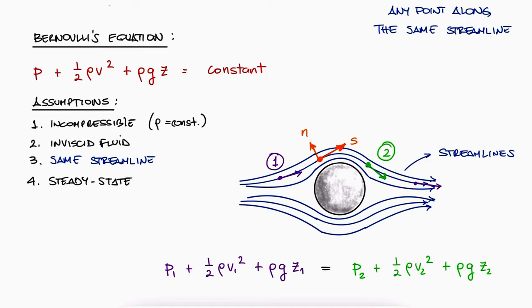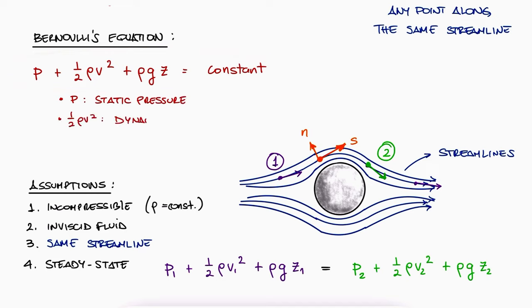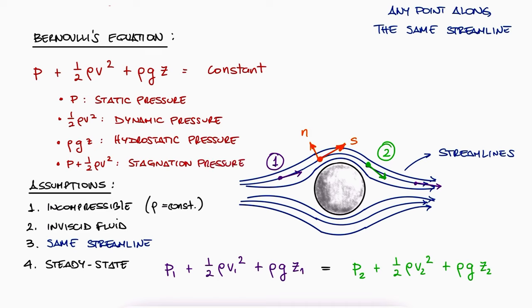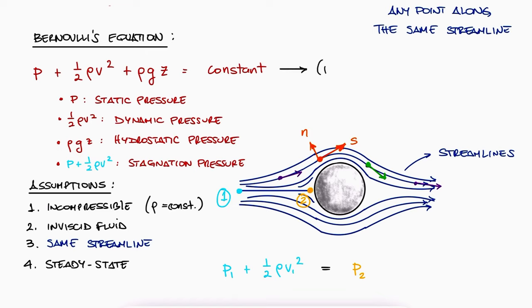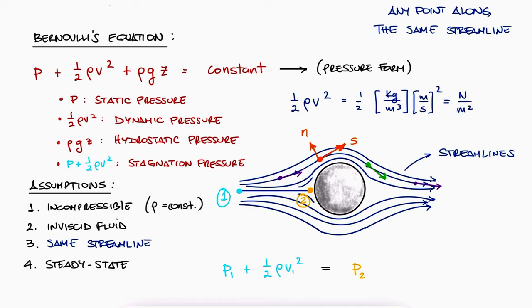This Bernoulli equation is usually written in three possible ways. The first is just as shown: p is the static pressure, rho v squared over two is the dynamic pressure, and rho g z is the hydrostatic pressure. We also refer to the first two terms together as the stagnation pressure — stagnation meaning not flowing or not moving. For a streamline that doesn't rise or dip, if we have two points along the streamline, we can state that the velocity at the stagnation point is zero, and therefore the pressure at point two equals the stagnation pressure. We call this the pressure form of the Bernoulli equation. Notice every term has units of pressure — for example, density in kg/m³ and velocity in m/s yields newtons per meter squared, or pascals.